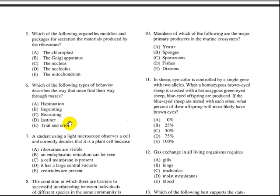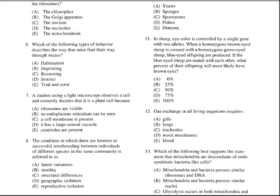Question number 7 says, a student using a light microscope observes a cell and correctly decides that it's a plant cell because... Let's go through the answer choices. Ribosomes are visible—well all cells have ribosomes. An endoplasmic reticulum can be seen—well all cells have endoplasmic reticulum. The cell membrane is present—well, if it said a cell wall is present, then that might have been the answer, but that is not what is said. Answer choice D says it has a large central vacuole. Well yes, that is the answer. Plant cells have large central vacuoles to maintain the cell shape or the cell structure, and it also uses it to make the cell relatively isotonic. So the answer is D.